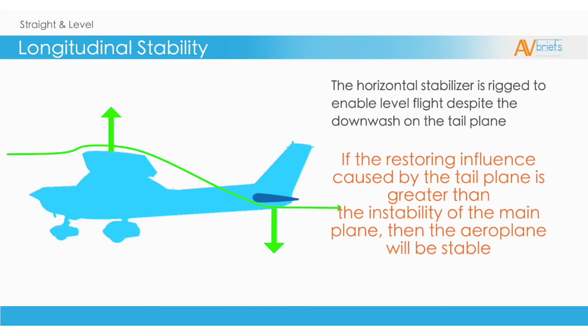What this means is that if the tailplane, also called the horizontal stabilizer, is applying more force than the main wing during a disruption, then the airplane will stabilize itself. This is because if the airplane pitches up, it produces more lift. That will cause the downwash to have a lower angle of attack on the tailplane. The lower angle of attack will cause the tailplane to fly up, cancelling out the mainplane's pitch-up.